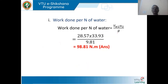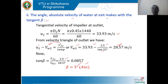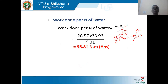Work done per newton = (1/g) × Vw2·u2, since Vw1 = 0. With Vw2 = 28.57 m/s and u2 = 33.93 m/s, substituting gives the work done per newton of water. If you understand the concept and know the formulas, you can easily apply them to get the answers.